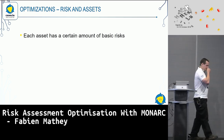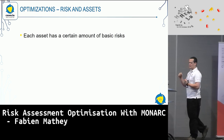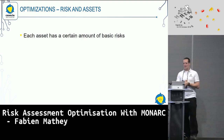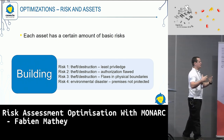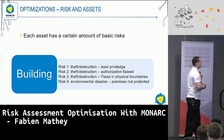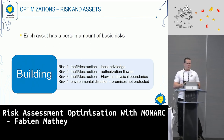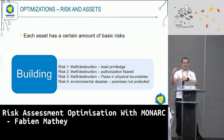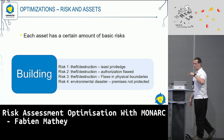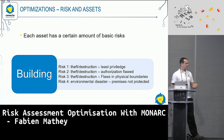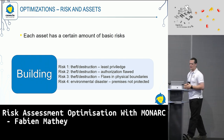Talking about optimizations, how can you actually go ahead and do the optimization without leaving anything out? Well, the first approach is that each asset has a certain amount of basic risks. If we take, for example, a building — in a building we have theft, destructions related to least privileges, flawed authorization, flawed physical boundaries, and environmental problems. These are, for example, four risks which are attached to a building.